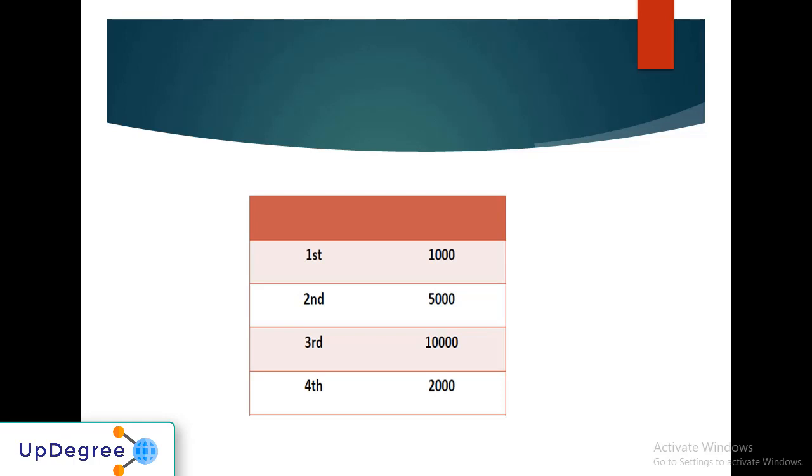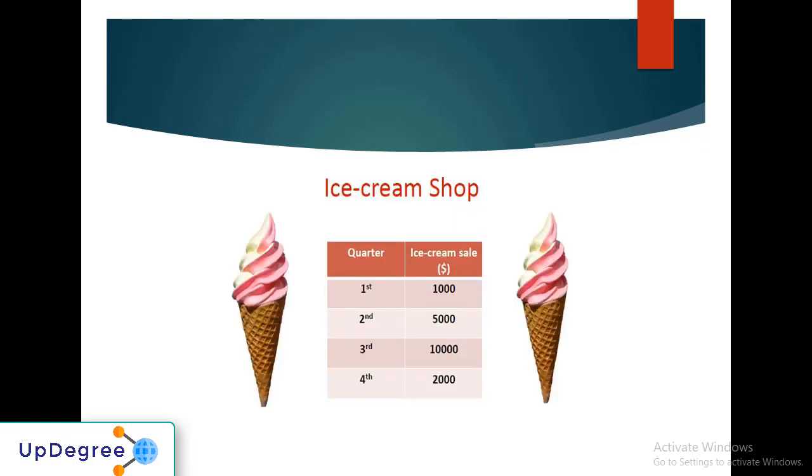First, I want to ask a question: what do you really understand from these numbers or the table you see here? I see some numbers, first, second, third, and fourth with 1000, 5000, 10,000, and 2000. I don't get it.